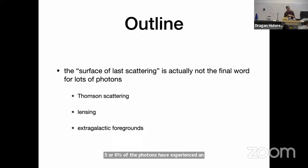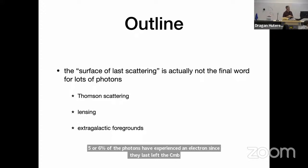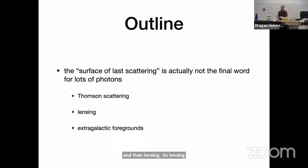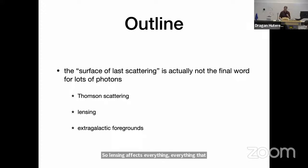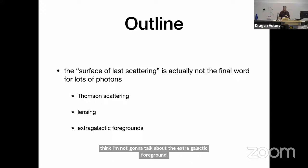Lensing affects everything that propagates through the universe. Those geodesics get deflected, and that includes the light from the CMB. I'm going to talk about the extragalactic foregrounds — not the ones that are generating new photons, just the ones that are mucking around with the original ones.